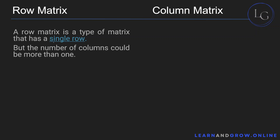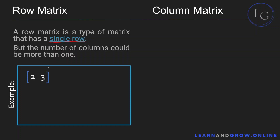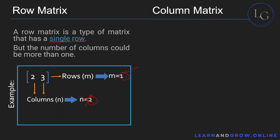Simply, a row matrix is a matrix that has one single row. It can have more than one column — we're not really concerned with that. An example of a row matrix would be this matrix here: it has one row but two columns. And this matrix here has one row and four columns — we're not concerned with the number of columns. The order of a row matrix is basically a one by n matrix: one row and n columns.